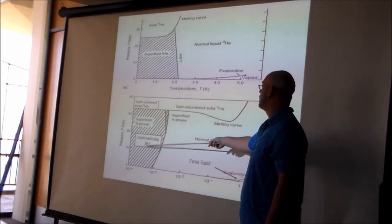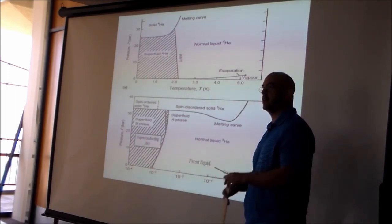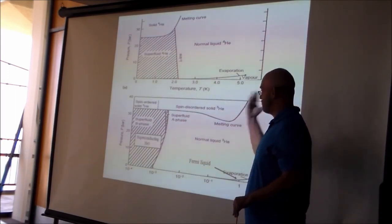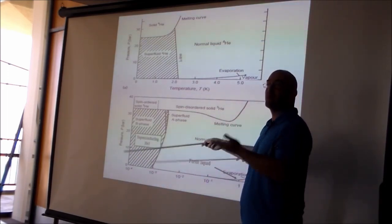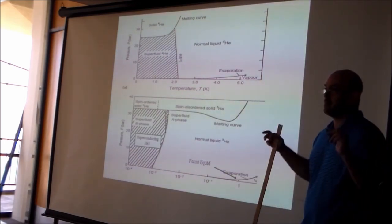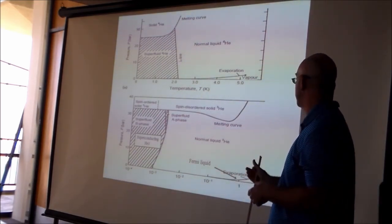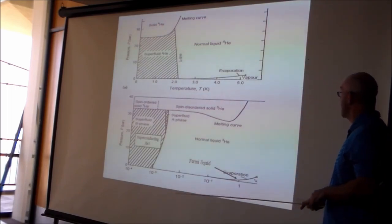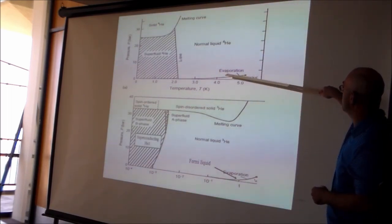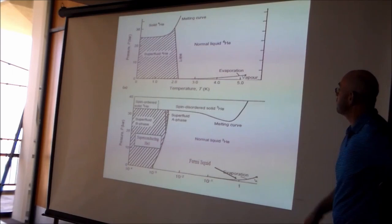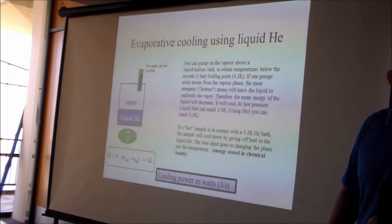Helium-3 can also kind of Bose condense even though it is a fermion, because the helium-3 atoms form Cooper pairs — this is interesting though not critical for the main topic. These are the two phase diagrams showing where helium-3 and helium-4 each go from liquid to vapor.